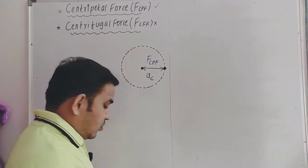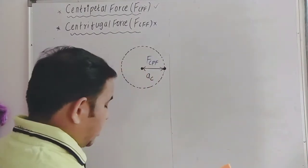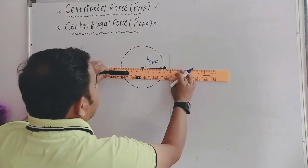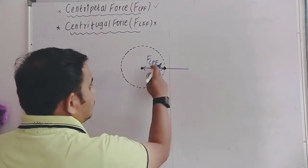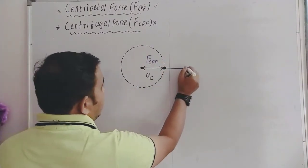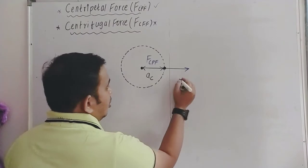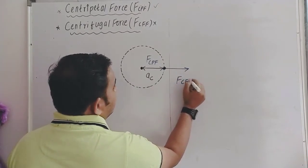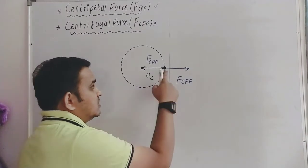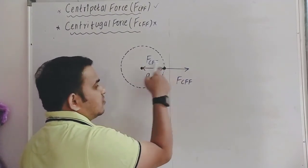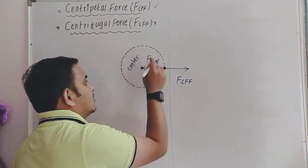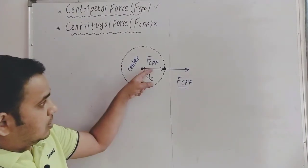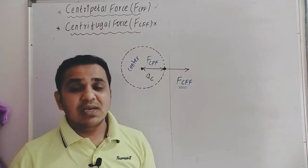The force that acts away from the center is called centrifugal force. It is a force along the radius and directed away from the center. So the definition: the force which is acting along the radius and directed away from the center is called centrifugal force.